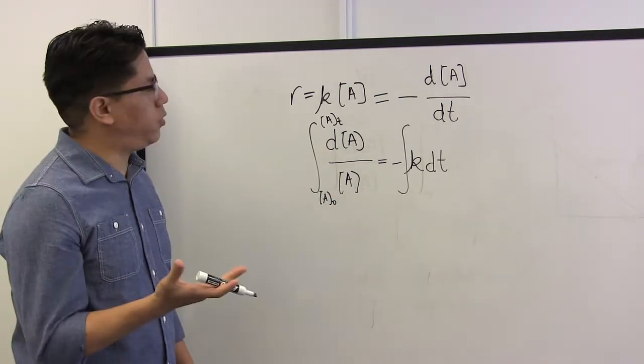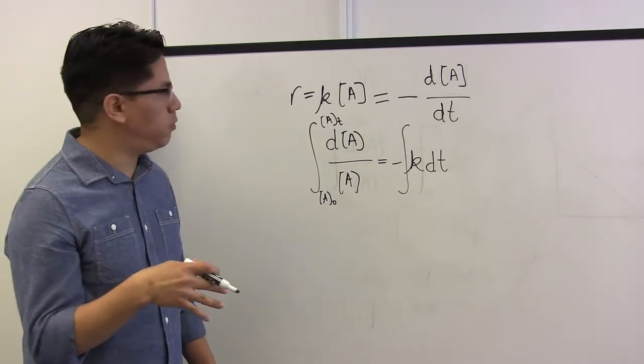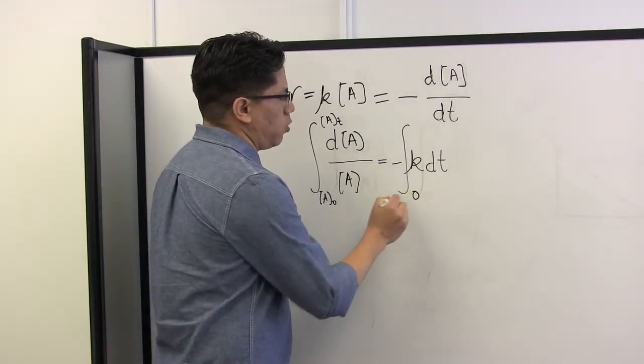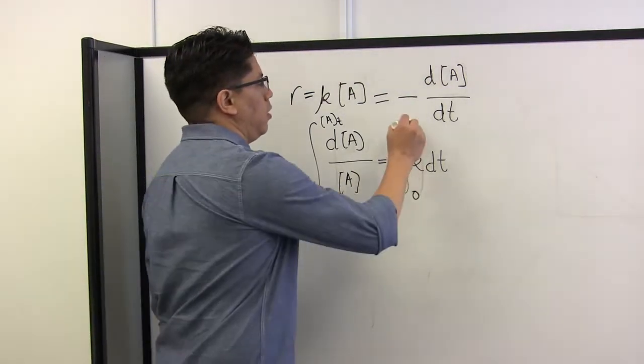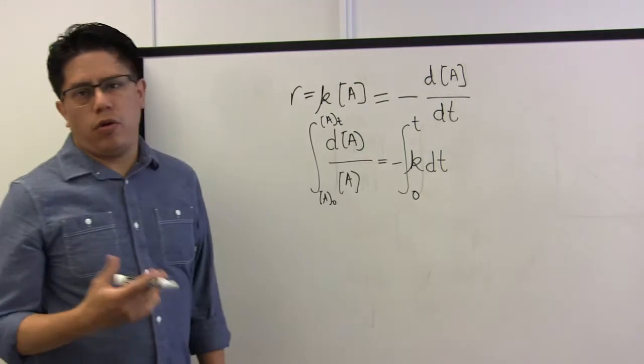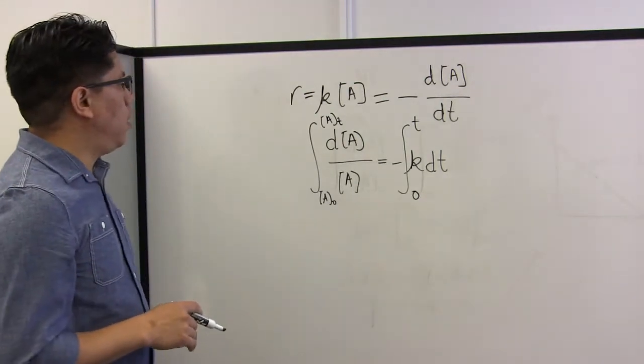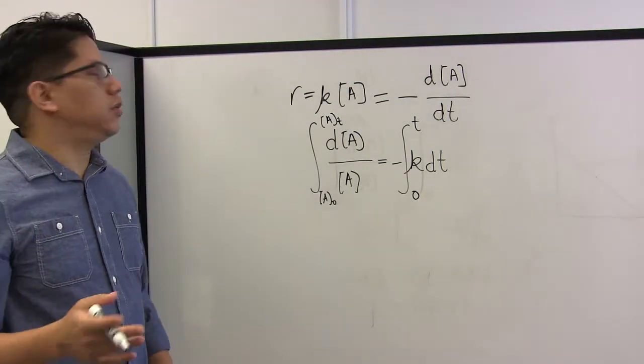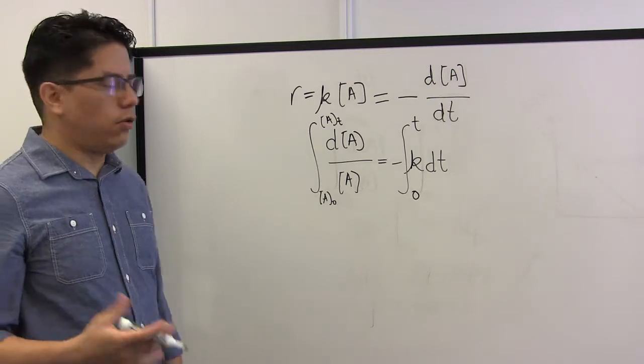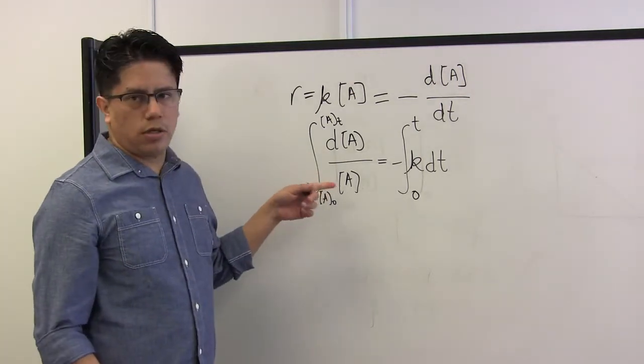Time zero when the water leaves the treatment plant, time t when I know if there is enough residual. And now I'm going to integrate this. Does any of you remember what is the integral of 1 over x? Instead of x I'm just using the concentration. Does anybody remember?